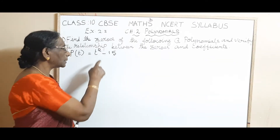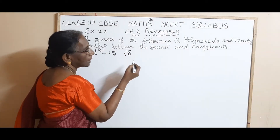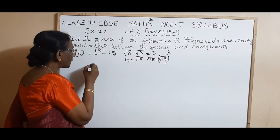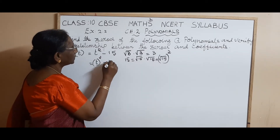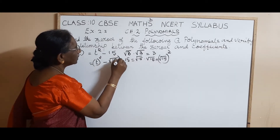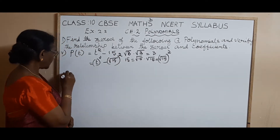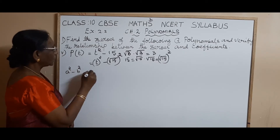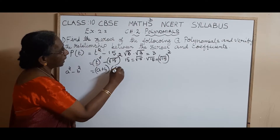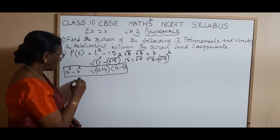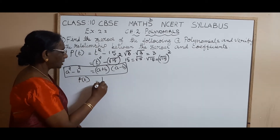First step, we have to find the zeros. For that, we have to factorize the given polynomial. And if you observe the polynomial, it is something special — only two terms are there. The middle term is missing. ax squared is there, but bx is missing. That means b is 0. And we have a constant.